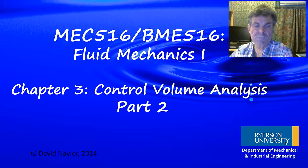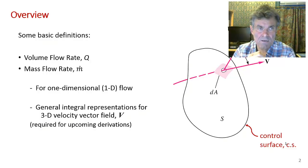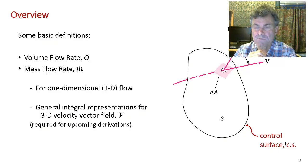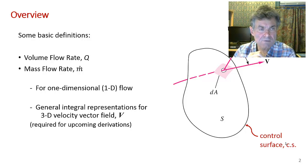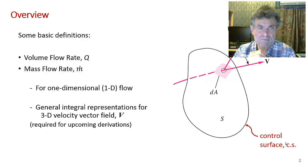Hi, welcome to Chapter 3, Part 2. In this video, I'm going to talk about some very basic definitions that we need for the rest of Chapter 3, and indeed the rest of the course. I'm going to talk about the definition of volume flow rate, represented by the symbol Q, and the definition of mass flow rate, represented by the symbol m-dot.